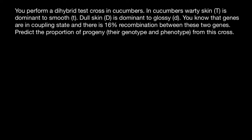First of all, what does the dihybrid test cross mean? That means that one parent is going to be capital T, small t, capital D, small d — this is parent one. And parent two: since we perform a test cross, parent two has to be small t, small t and small d, small d. So now we call this a dihybrid test cross.